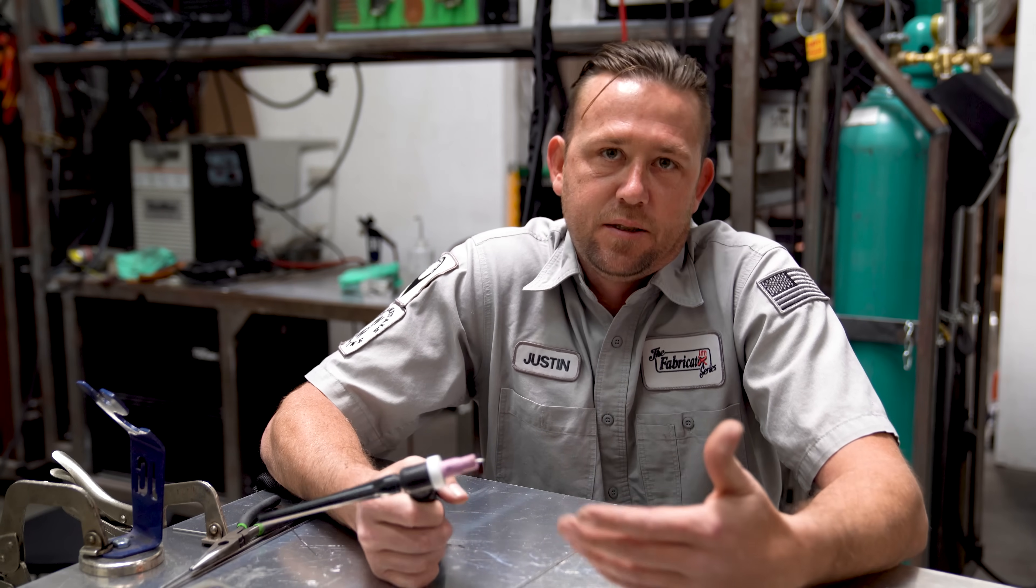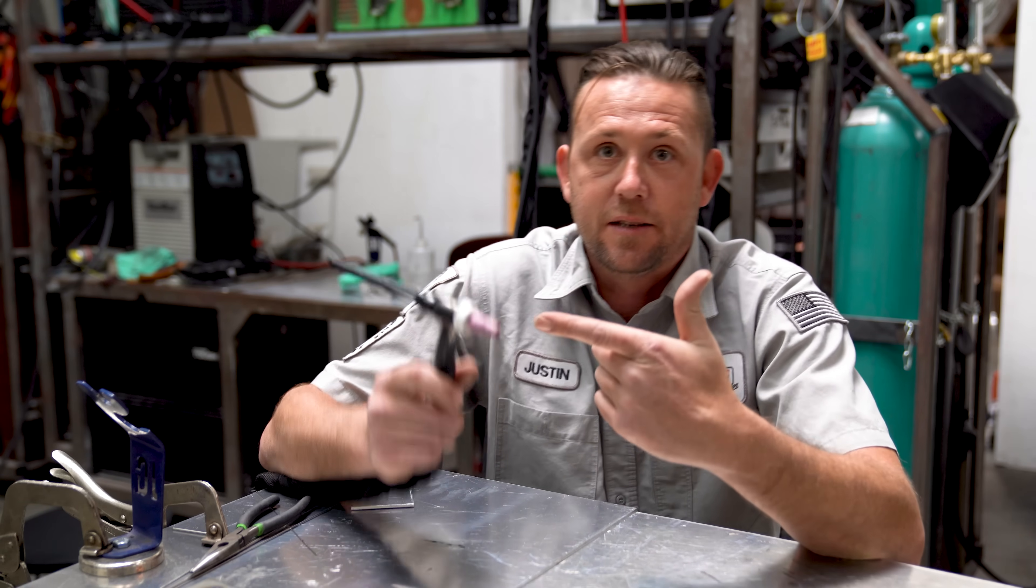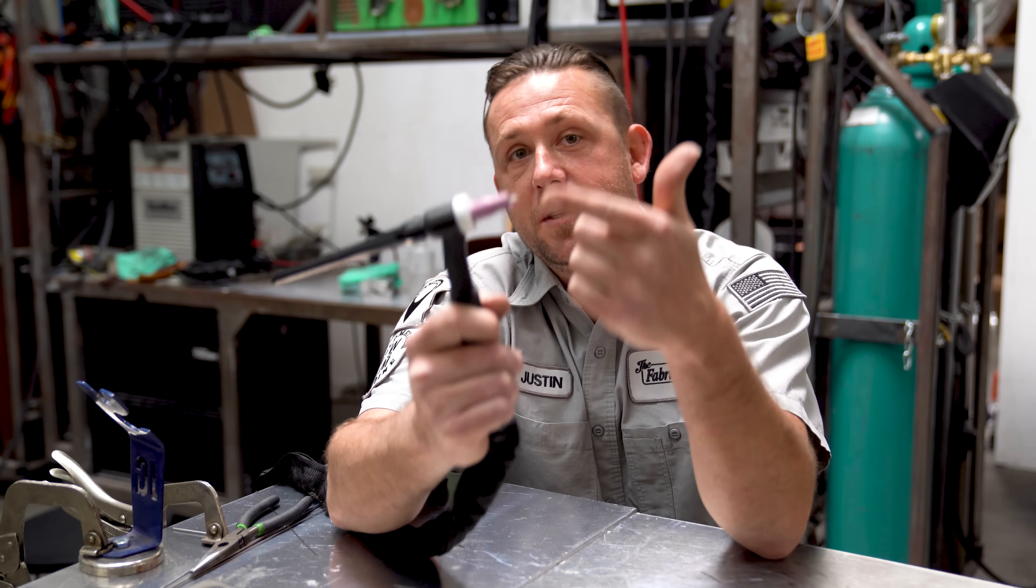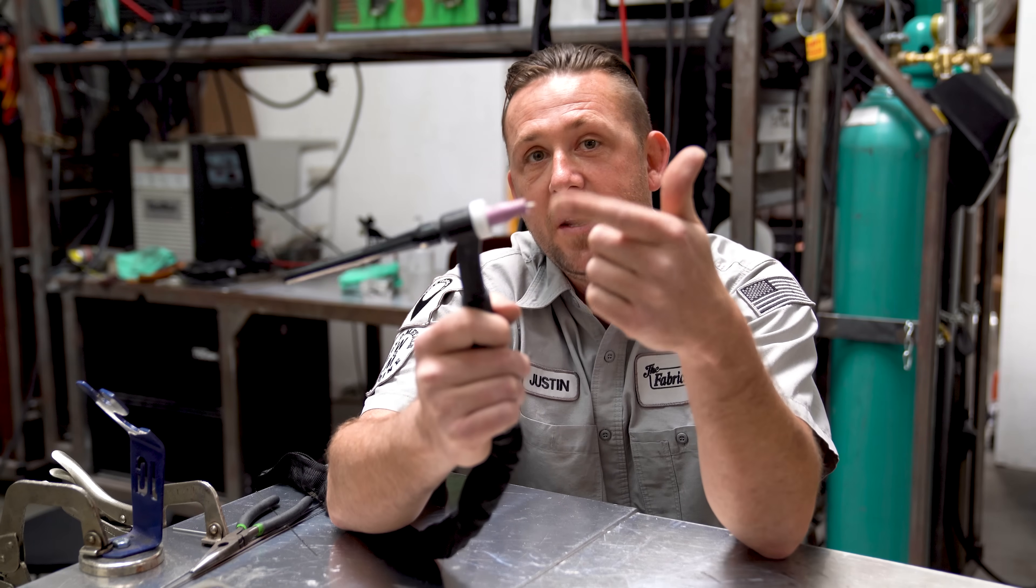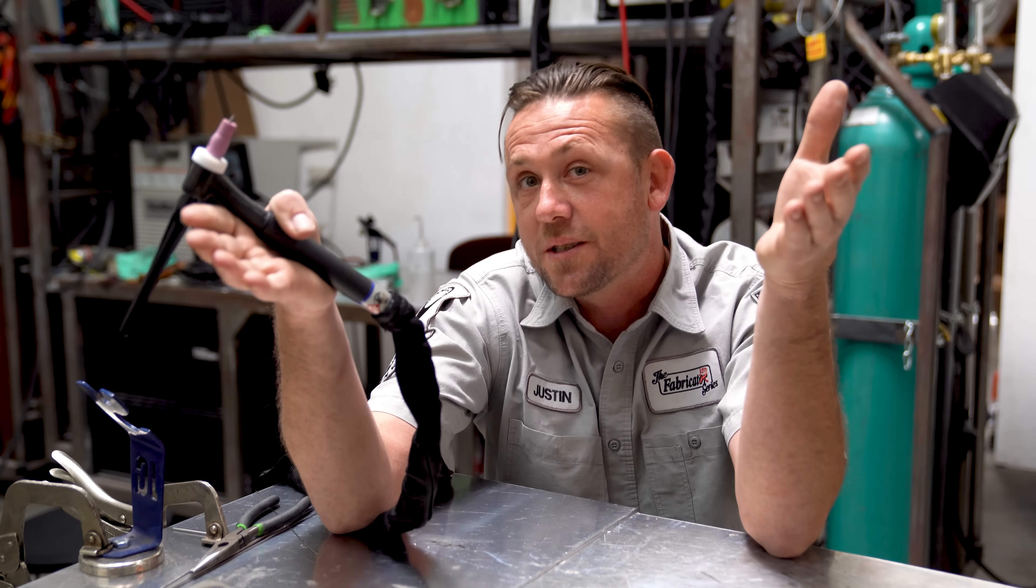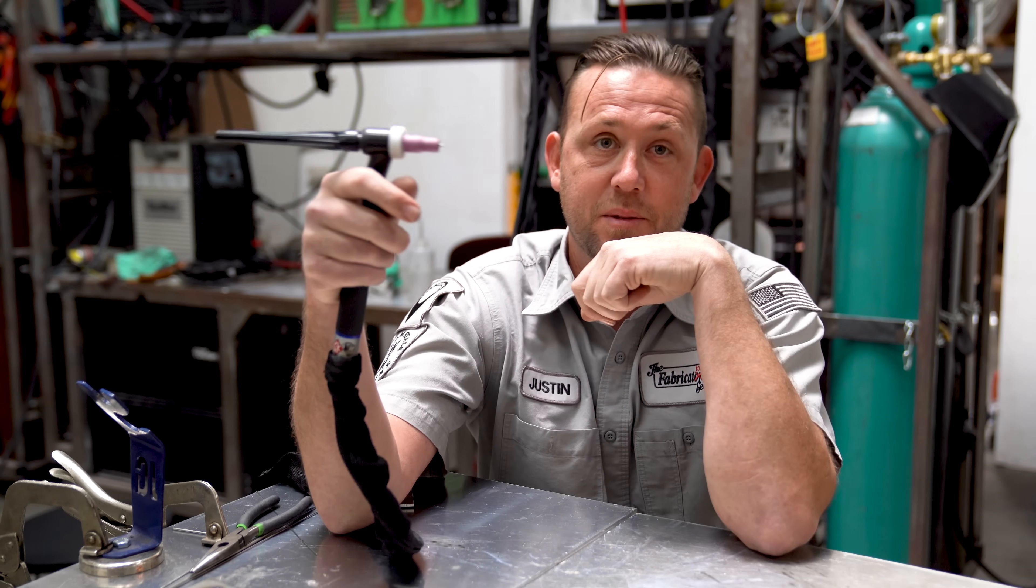One question I receive a lot has to do with the size of the cups I use, specifically on aluminum. Well, there's the answer, right there. A number five cup is all I use for all of my aluminum. Now, the reason why is a little bit more scientific and worth checking out this episode.